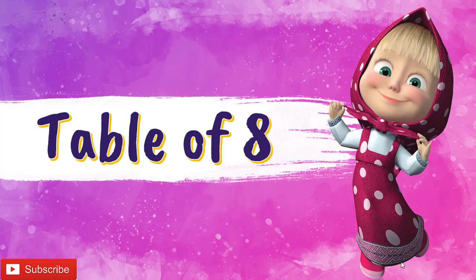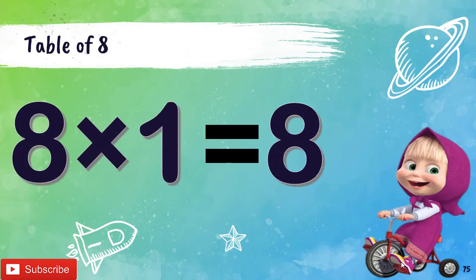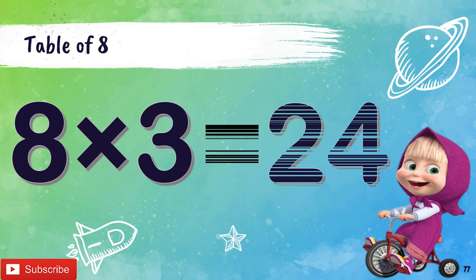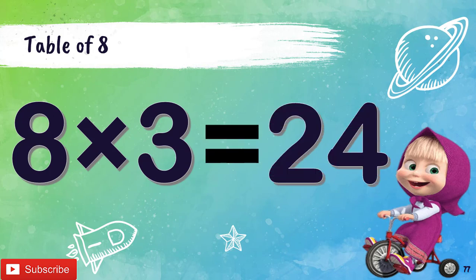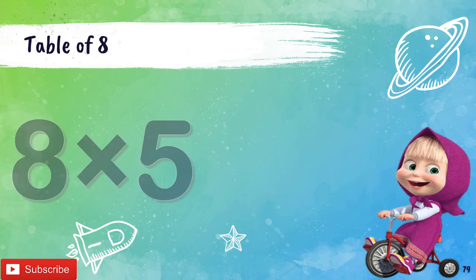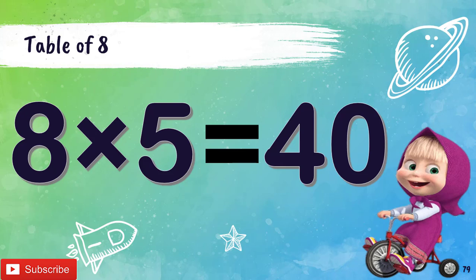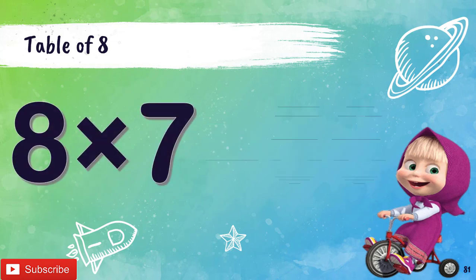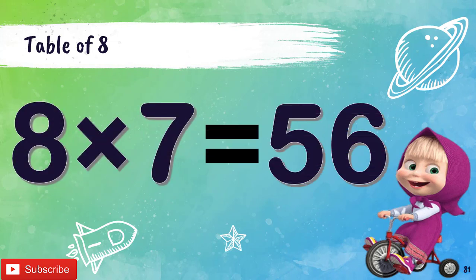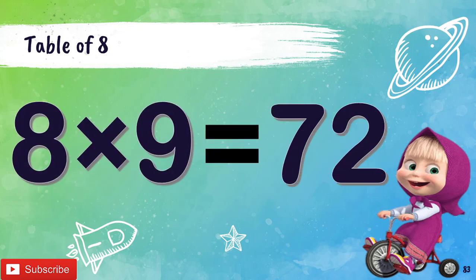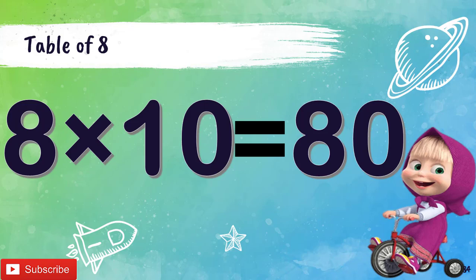Table of 8: 8 1's are 8, 8 2's are 16, 8 3's are 24, 8 4's are 32, 8 5's are 40, 8 6's are 48, 8 7's are 56, 8 8's are 64, 8 9's are 72, 8 10's are 80.